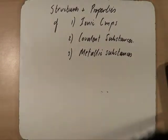Hey guys, welcome to the next video in bonding and structure. So we've already looked at three different types of bonding: ionic bonding, covalent bonding, and metallic bonding.